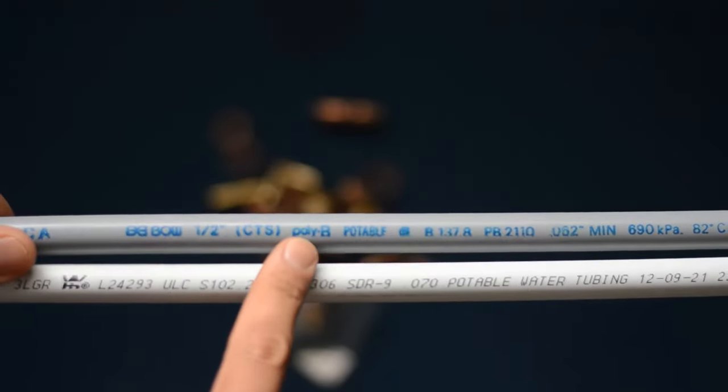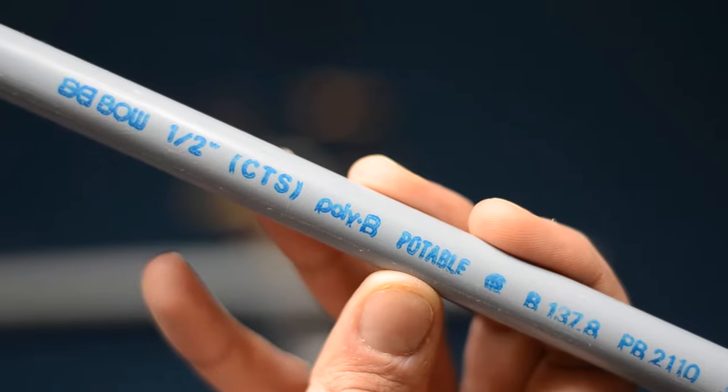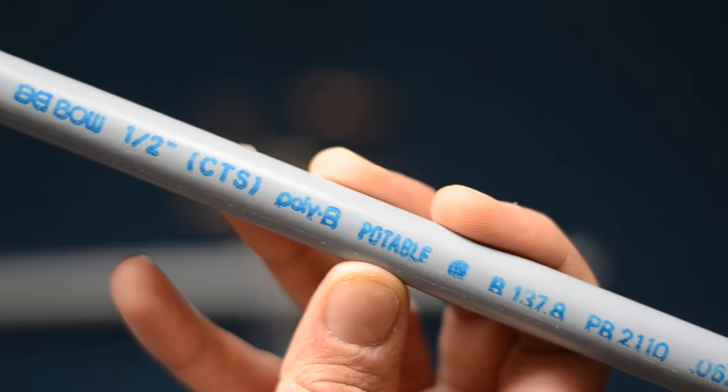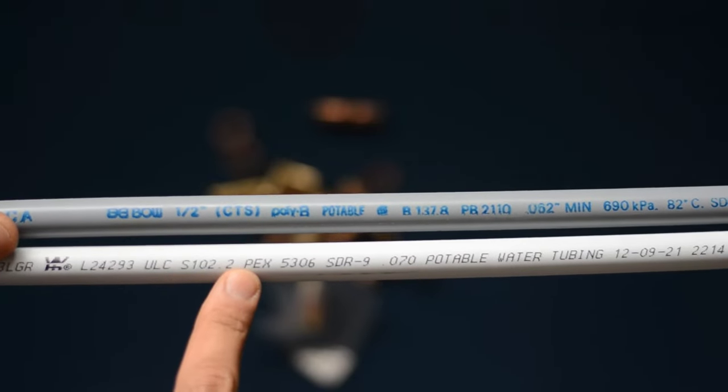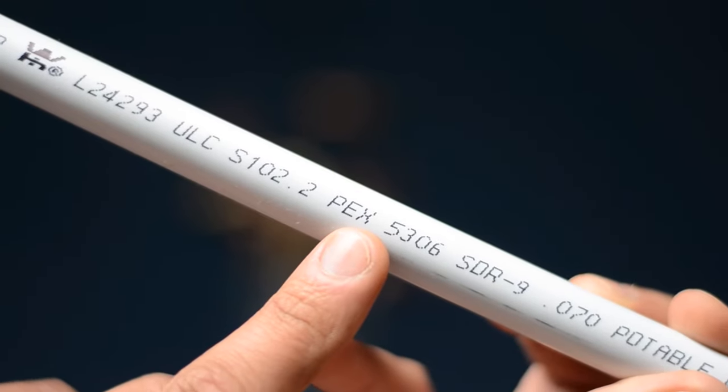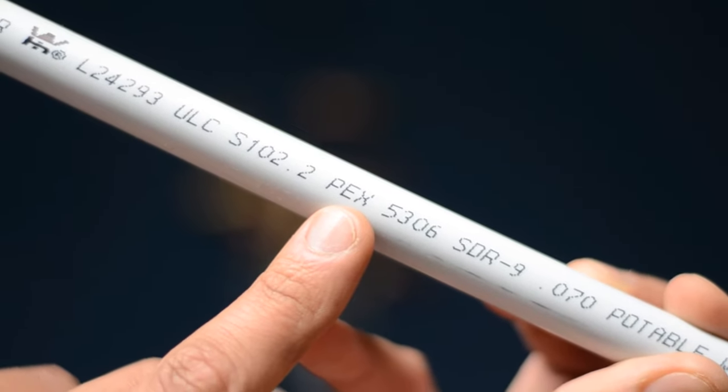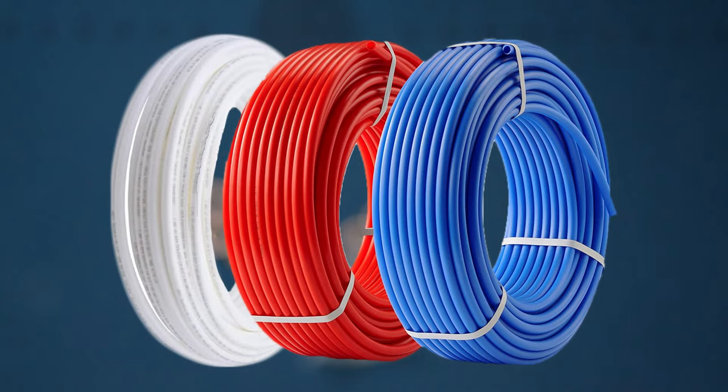This grey pipe is poly B which was discontinued in mid 90s and pex came about to replace poly B which is this white one. Pex also comes in red, blue and milky white color.